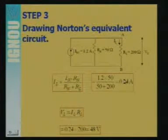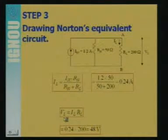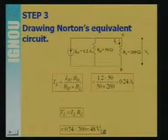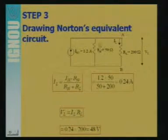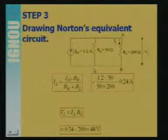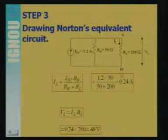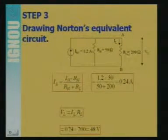Putting the values: IL is calculated, then the voltage equals IL multiplied by RL, giving 48 volt. We have learned how to find the current through any resistance. There are several methods to solve this question. Here we applied Norton's theorem.